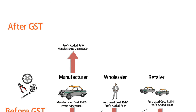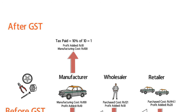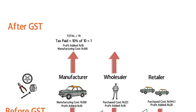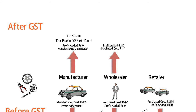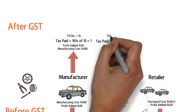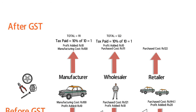Under GST, tax is collected only on the value added to the product. So tax is collected only on 10 rupees in this case, meaning the manufacturer pays just 1 rupee as tax. The wholesaler buys the product at 111 rupees from the manufacturer, pays tax on the profit he adds, and the final rate at which he sells the product to the retailer would be 122 rupees.